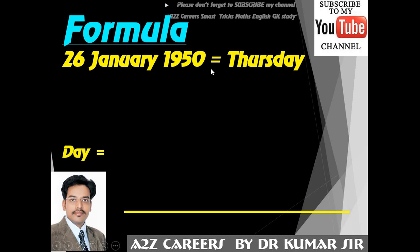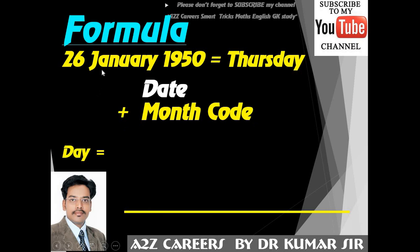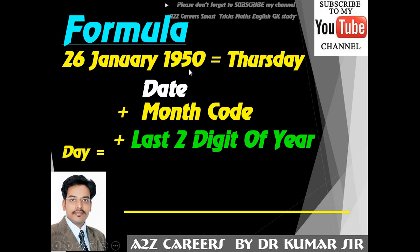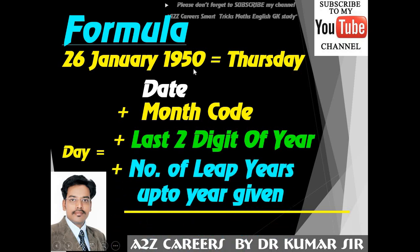This formula works like: if you are asked what day was 26th January 1950, that was the first Republic Day. How to calculate this — was it Thursday or not? The formula is: you will take the date, 26th January, then plus the month code. I will tell you the month code table later on. There are 12 codes of the month which you have to put in directly. And the last two digits of the year given — like 1950, so you take 50.